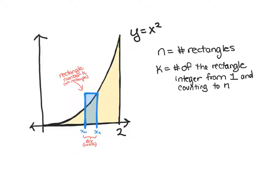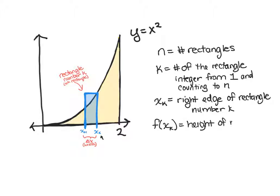And then we're going to label the x value, x sub k, as the right edge of rectangle number k, so right here. And we're going to plug that into our function, and f of x sub k is our height of rectangle k. And then delta x will be our width of rectangle k, the width of all the rectangles.